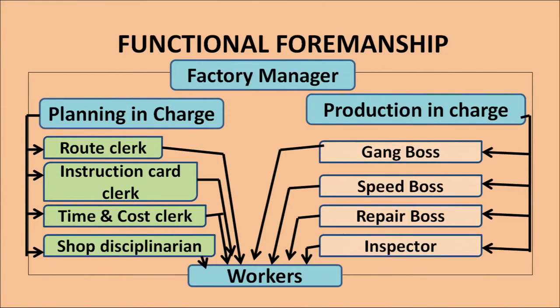According to Taylor, you require experts or specialists under both the planning division and the production division. Under the planning division, the four experts he identified were the route clerk, instruction card clerk, time and cost clerk, and shop disciplinarian. Under the production department, he identified the role of four major experts: gang boss, speed boss, repair boss, and inspector. Let us further understand the role of these eight specialists identified under functional foremanship.